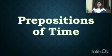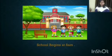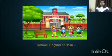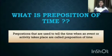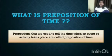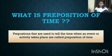So let's start the topic. Let's read the given sentence: 'School begins at 8am.' The preposition 'at' is used to tell us the time when the school begins. Now the question arises, what is a preposition of time? The prepositions that are used to tell us the time when an event or activity takes place are called the prepositions of time.